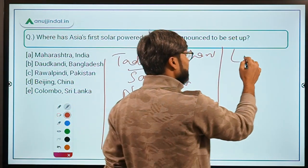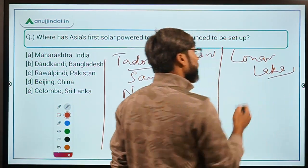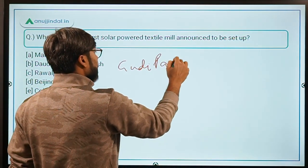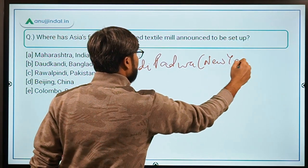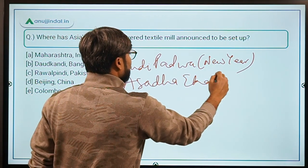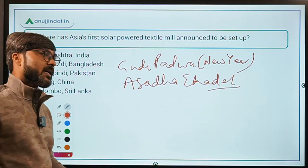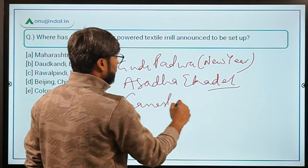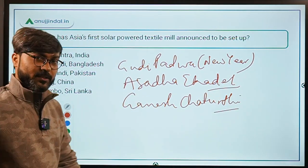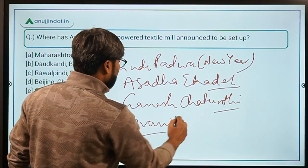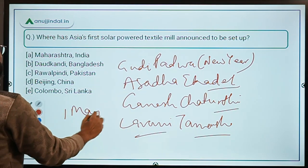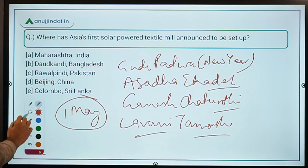Maharashtra also has the famous Lonar Lake. The Maharashtrian New Year festival is Gudi Padwa, and they also celebrate Ashadhi Ekadashi and Ganesh Chaturthi. Traditional dance forms include Lavani and Tamasha. The 1st of May is the formation day of Maharashtra. Maharashtra is the correct answer for question 5.